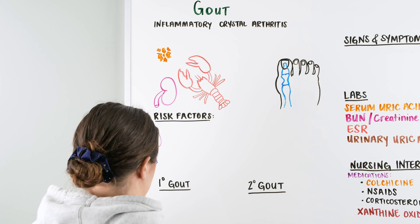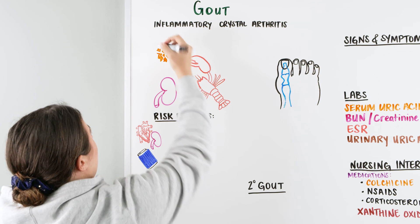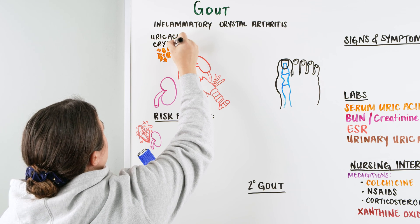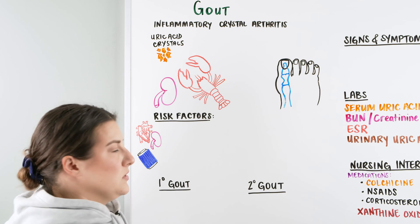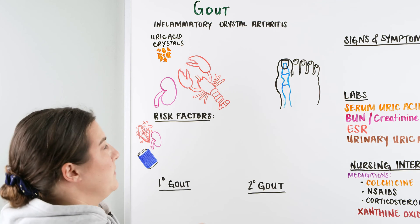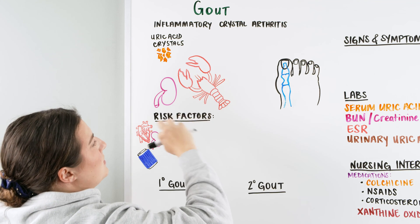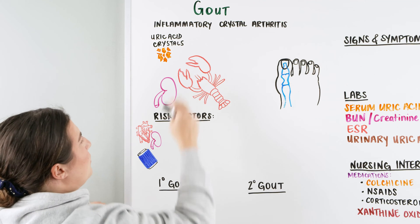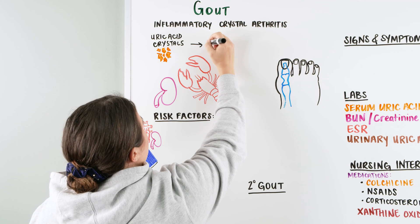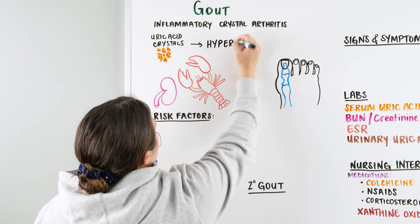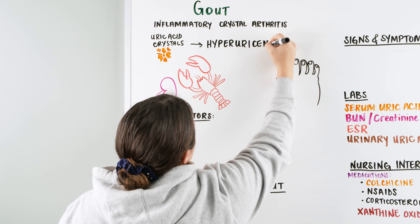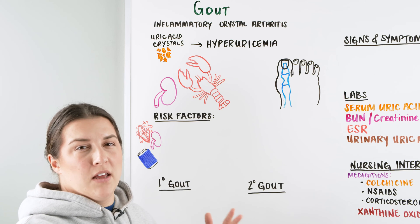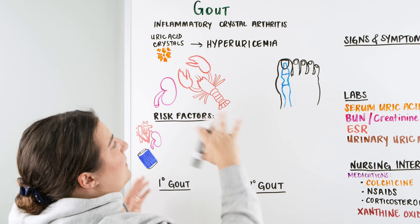Within our body, we have something called uric acid. Right here I have some uric acid crystals. When we eat things that contain purines — like seafood, alcohol, high fructose corn syrup — we get purines in our body. Purines then go through some changes and eventually we come to a product called uric acid. When we have a lot of uric acid in the blood, we call that hyperuricemia, meaning a lot of uric acid in the blood. When those levels are high, we get these crystals and they're not going to get flushed out from our body through elimination in urine.